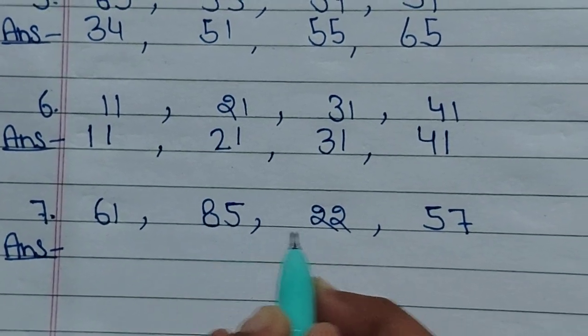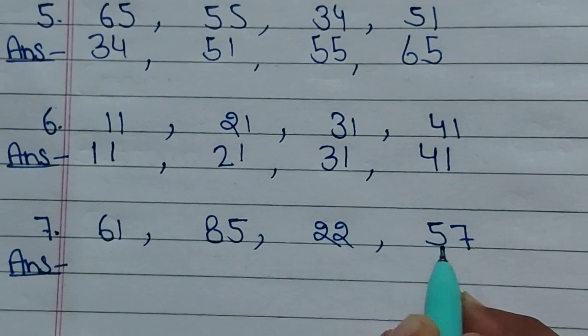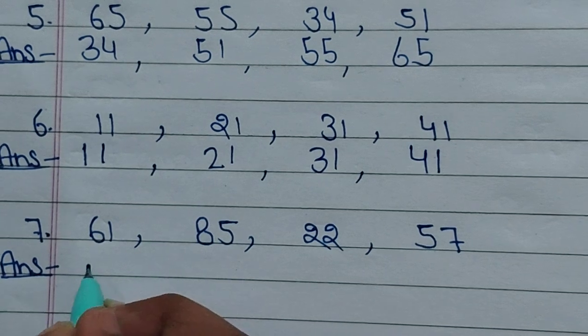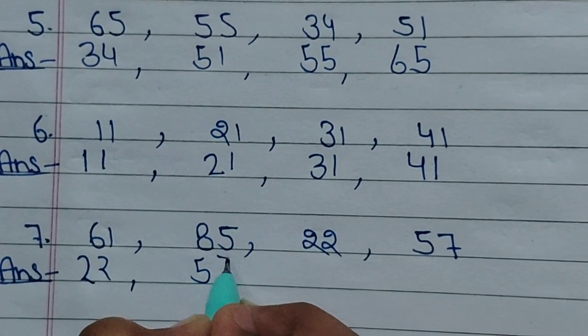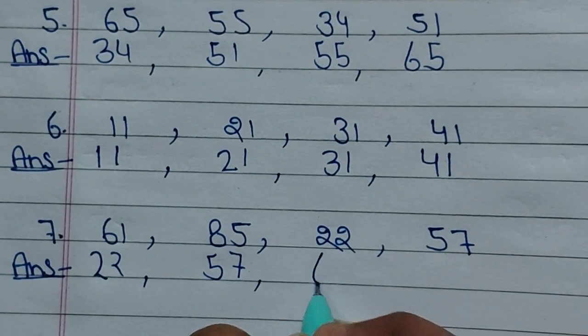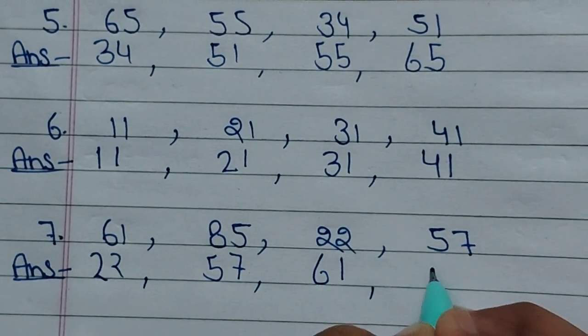61, 85, 22, 57. In ascending order: 22, 57, 61, 85.